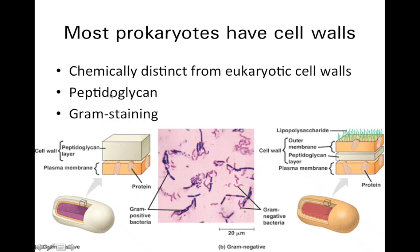Glycan suggests that there's carbohydrate involved, like glucose or glycerol, and that would be correct. So peptidoglycan is a mix of amino acids and carbohydrates.